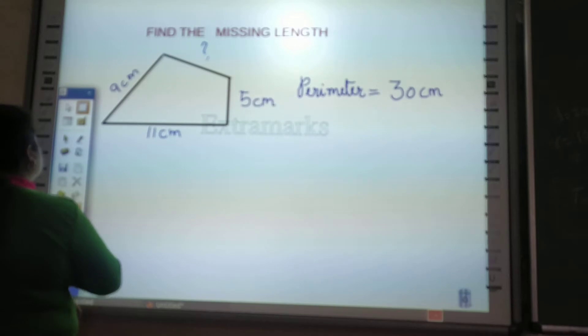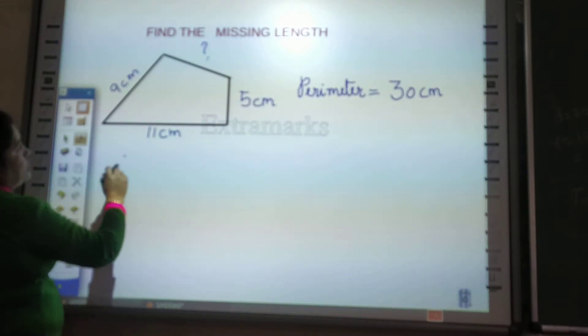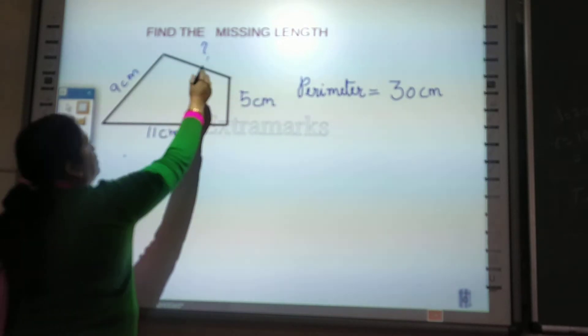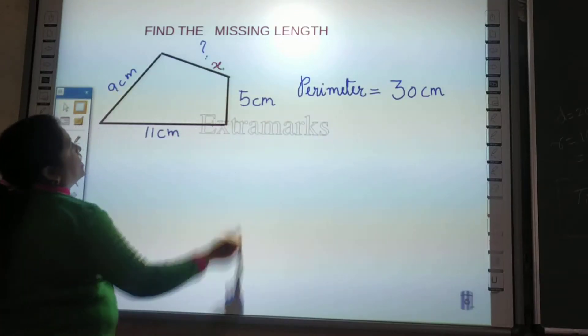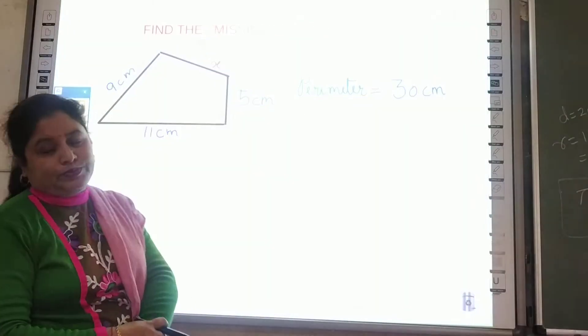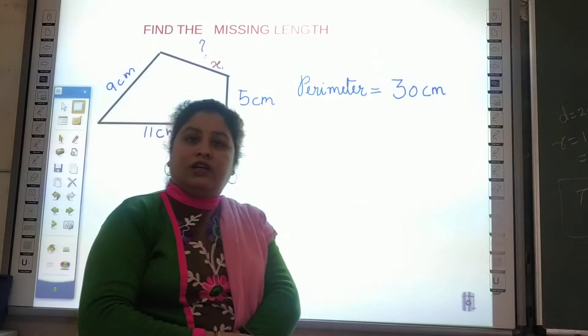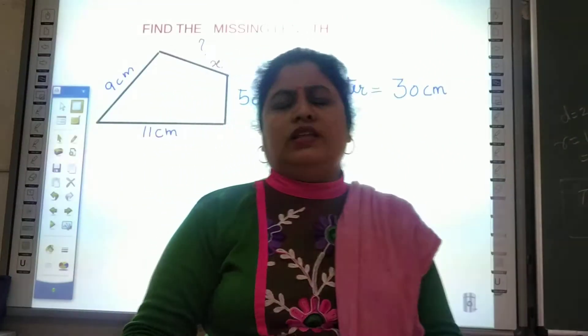Very easy question, children. The result is very easy. Whatever is not known to us, we represent it with an alphabet. We take X — you can also use A, B, or any other letter. I'm taking X.